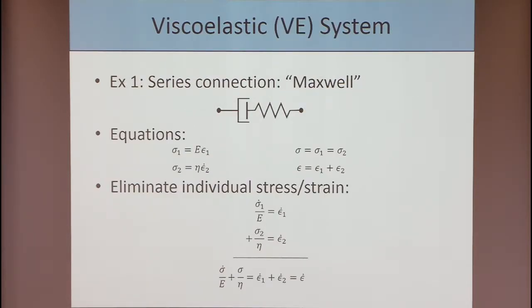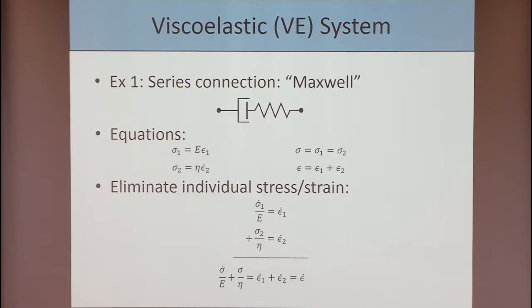Let's look at an example. Take a spring and a dashpot combined in series — this is commonly done and has a special name: a Maxwell element. Using the rules we just mentioned, the stresses are the same but the total strain is the sum of individual strains. We take our two equations, divide by their respective constants, sum them up, and eliminate the individual stresses and strains to get the total stress-strain relationship. The result is a first-order linear differential equation.